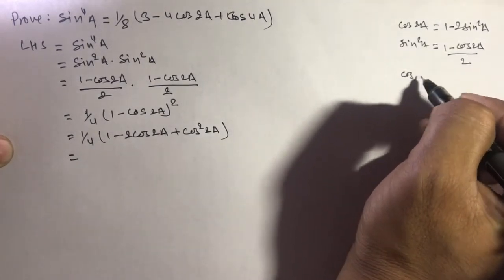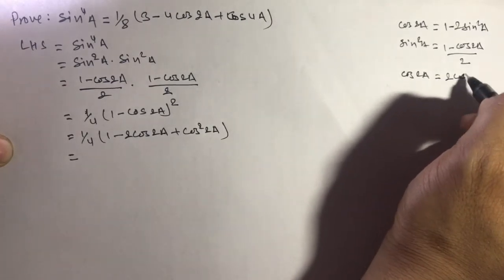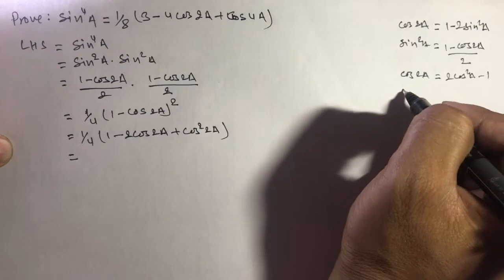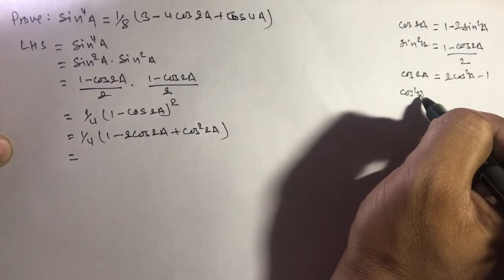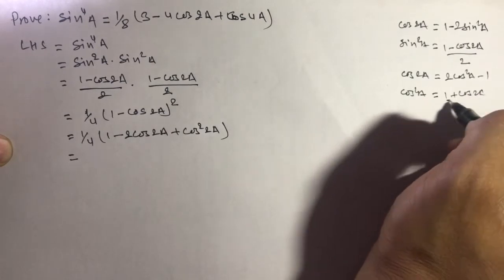Similarly, we have another formula: cos 2a equals 2cos²a - 1. Then cos²a equals (1 + cos 2a)/2.